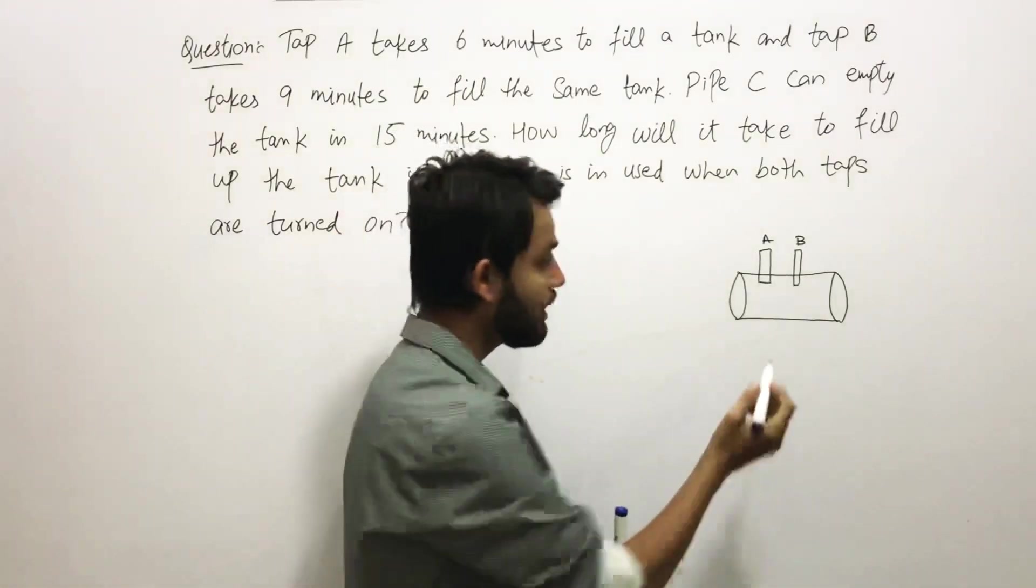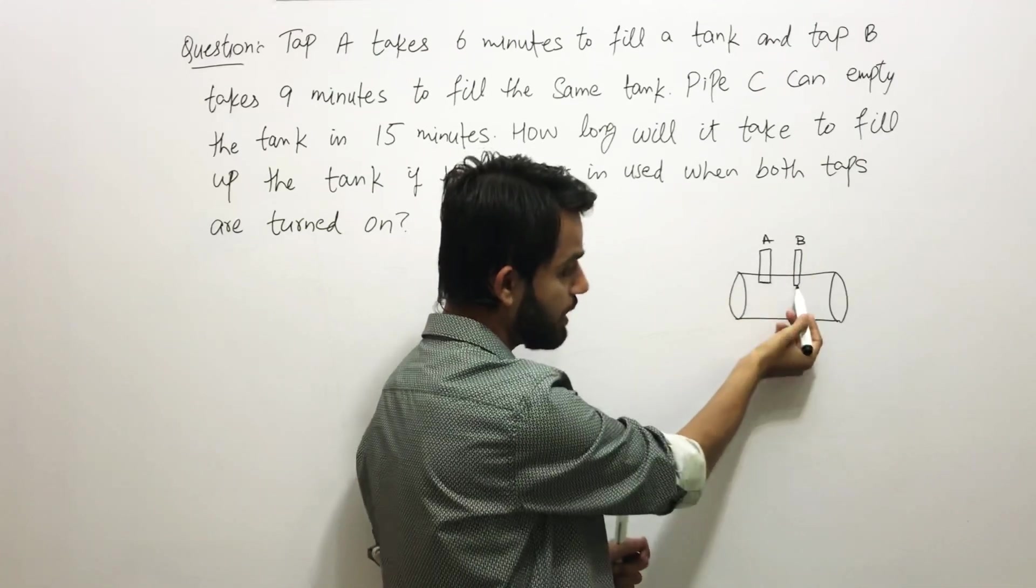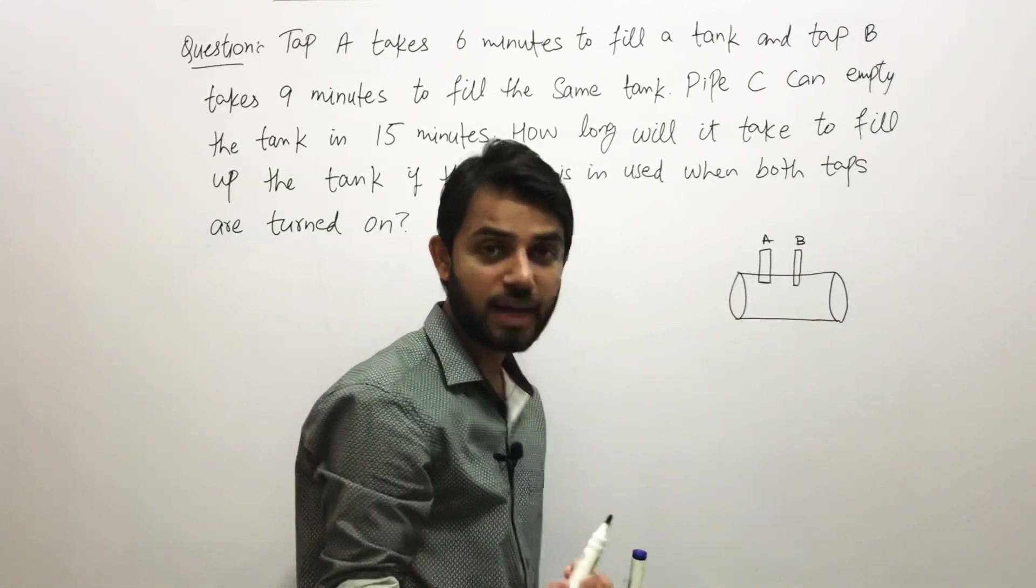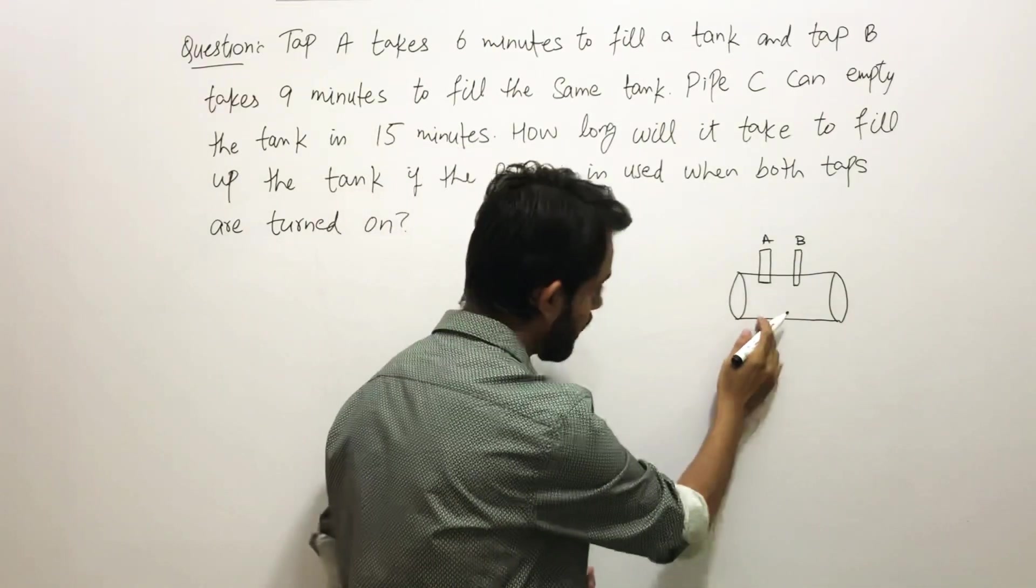Tap A has more diameter—it's actually a circular tap, you have to assume this is a circular tap and I can't really draw it—so it has more diameter, that is why it takes less time. For Tap B, it's taking more time because the diameter of the tap is actually smaller than Tap A. Now there is a Pipe C over here.